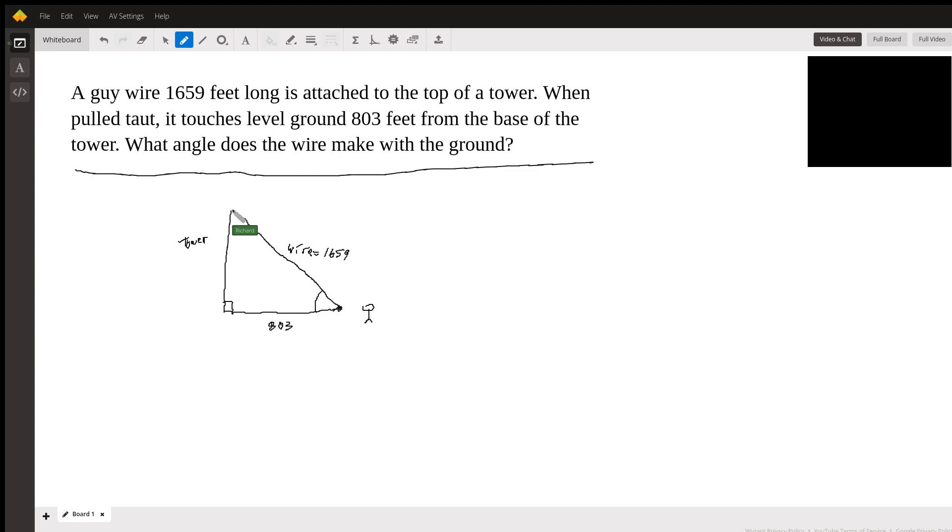...look at the top of the tower, your head would have to swivel upward. And so this upward swivel of your head—that's called the angle of elevation. That's the way I remember it, because you have to elevate your head to see. So that's just a little trick that might help you remember the vocabulary here.